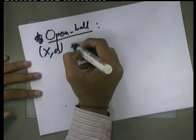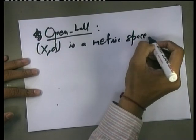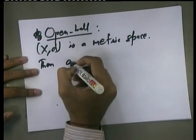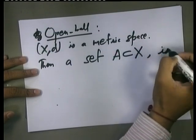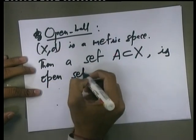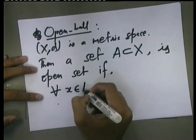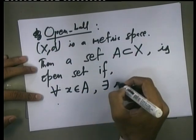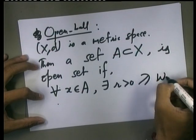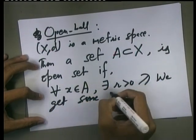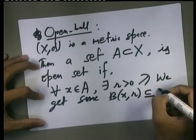If (X,d) is a metric space, then a set A subset of X is an open set if for every x belonging to A, there exists some positive radius such that we get some open ball centered at x with radius R such that it is entirely contained in the set A.